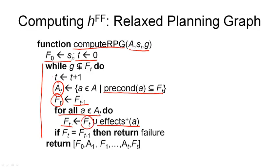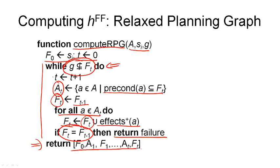There are two termination conditions. The first is the while loop condition: we terminate when all goal conditions are part of the last proposition layer. The second condition is triggered when the proposition layer is no longer increasing — we return failure, because the goal conditions are not in the last layer and the layer cannot grow further. If the loop terminates normally, we return the relaxed planning graph. While this is somewhat similar to planning graph expansion, no mutex relations are computed here, which means the relaxed planning graph is smaller and we terminate sooner.